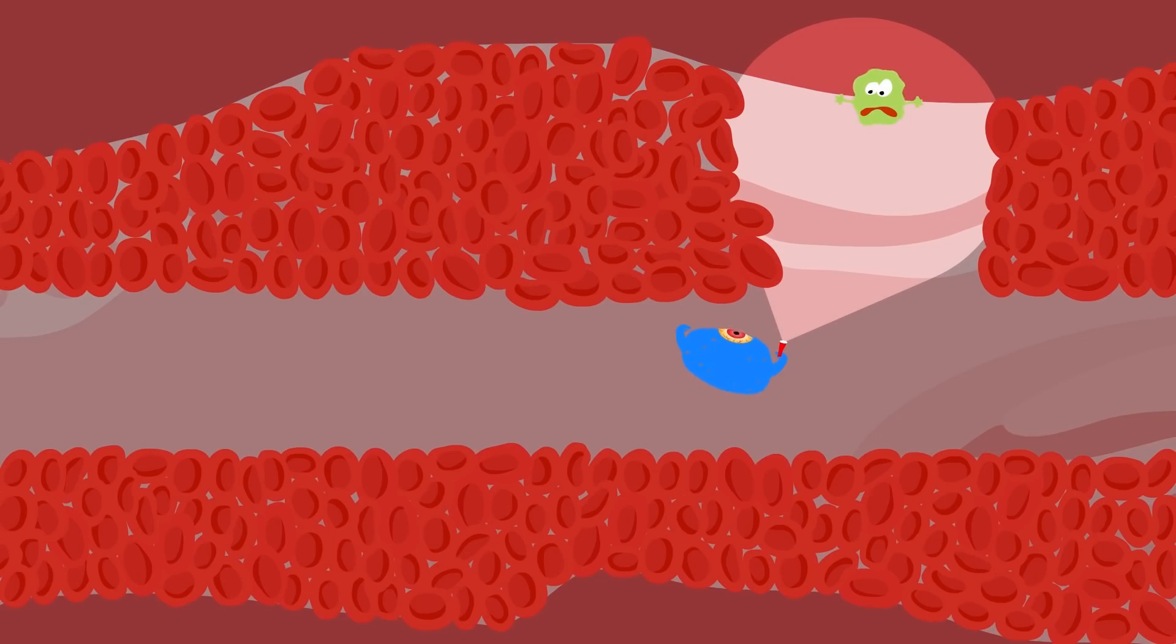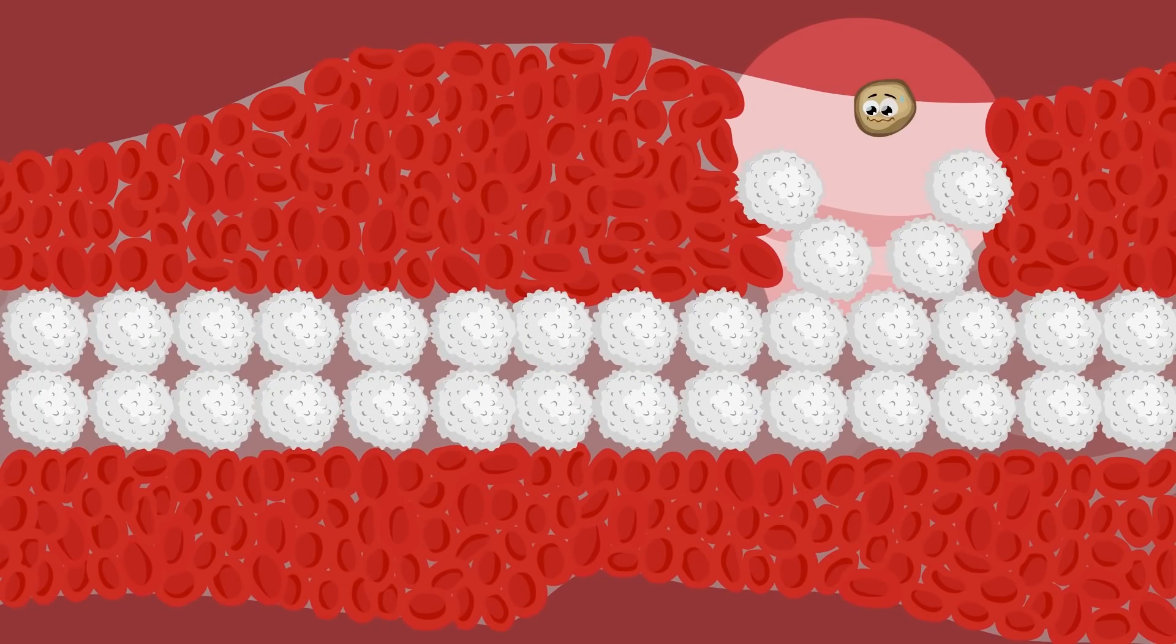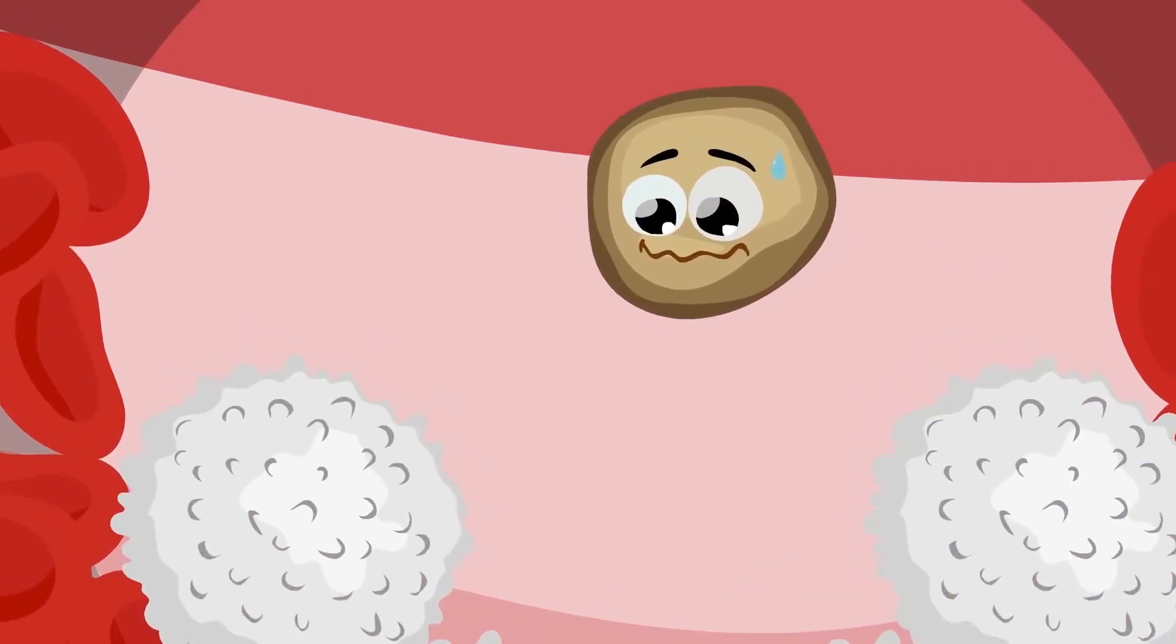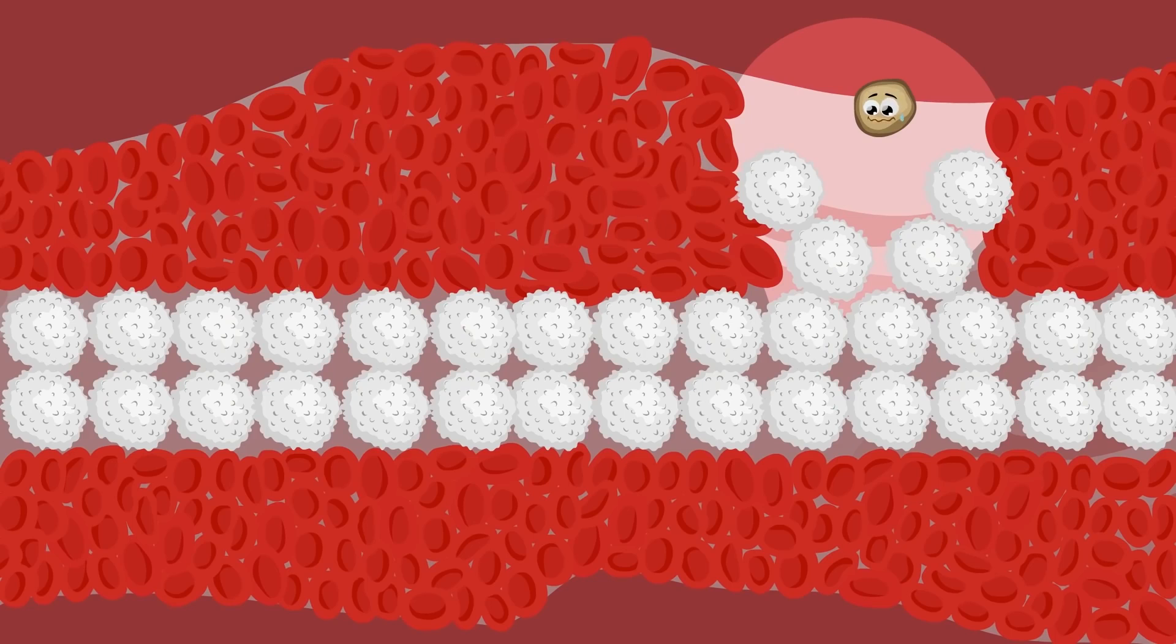For example, when a virus enters the body, specialized cells called macrophages engulf and digest the virus, while natural killer cells (NK cells) release chemicals that can kill infected cells.